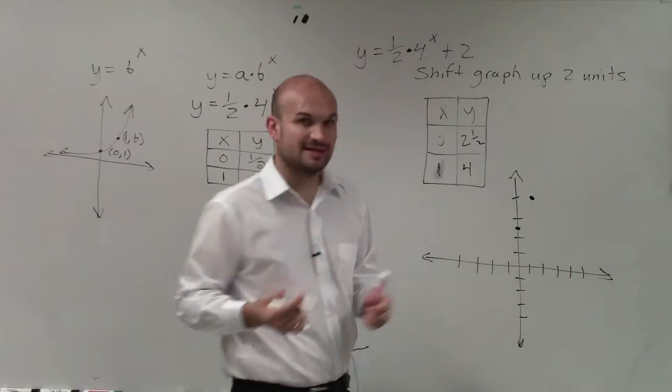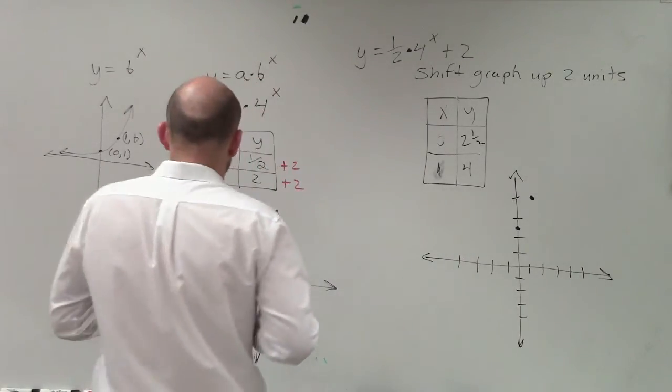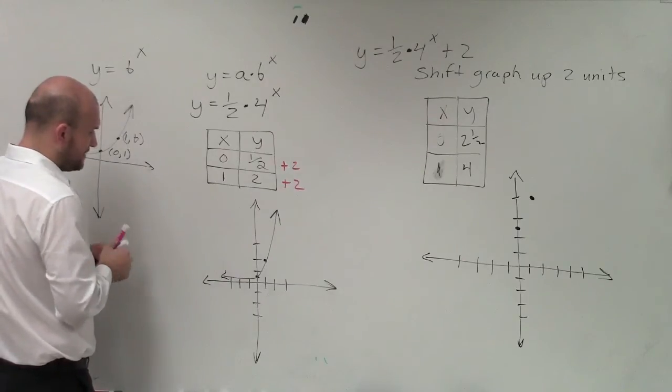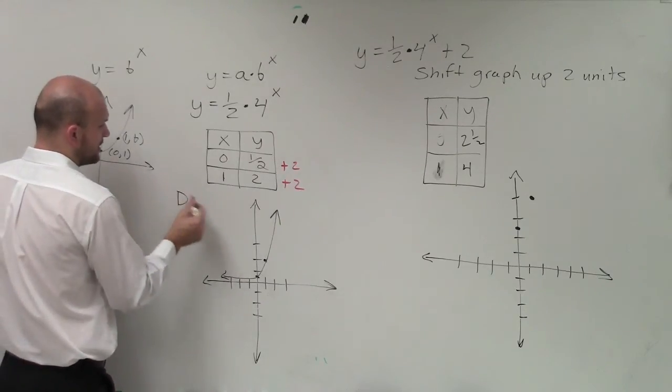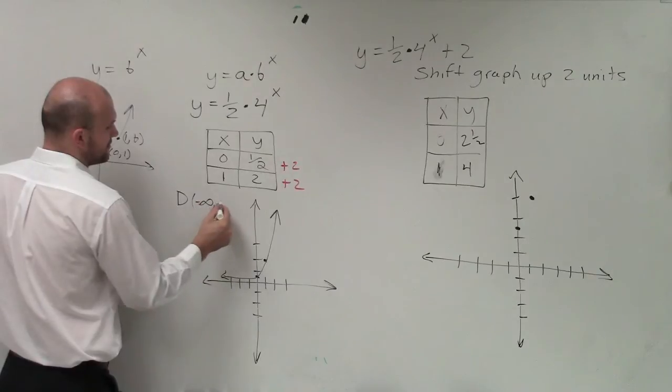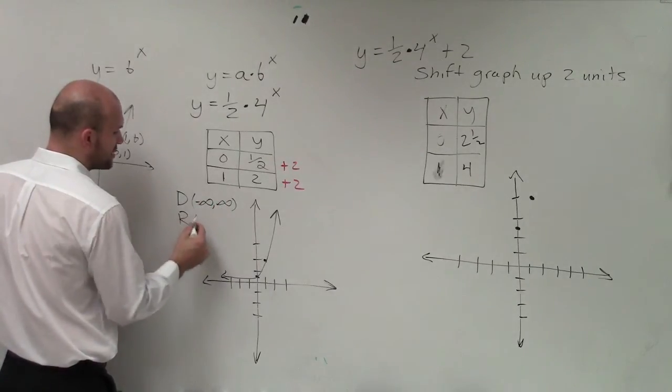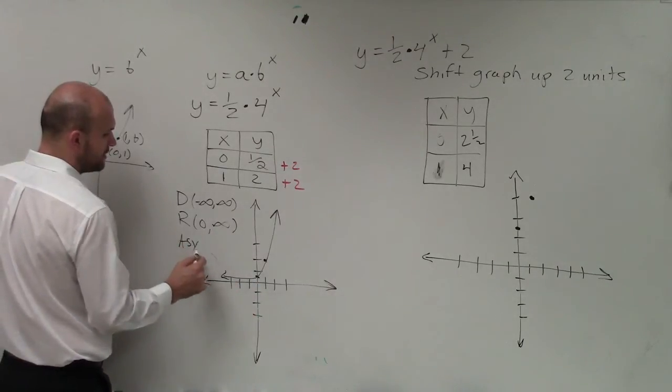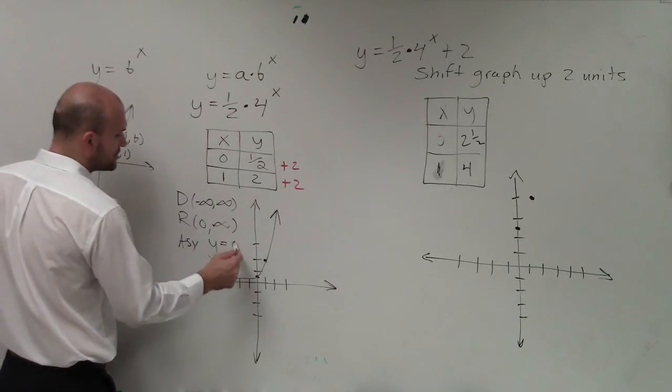Now, the main important thing now, before I even get to graphing this, there's a couple things we need to remember. Going back from my parent graph, I need to understand that my domain of this is going to be all real numbers, and that my range is going to be from 0 to infinity. And I also have an asymptote that my graph is approaching that is at y equals 0.